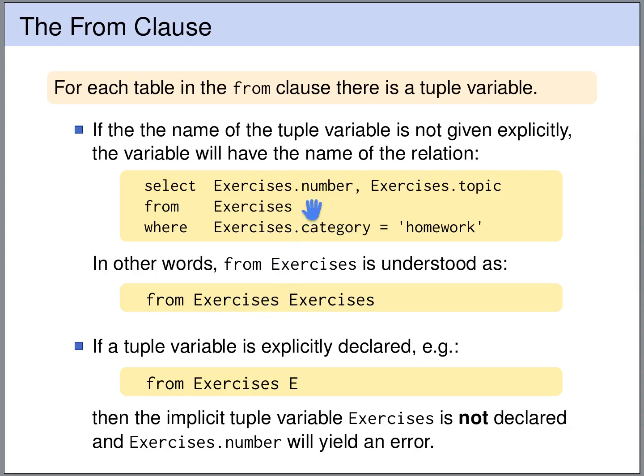So in this case, we have a tuple variable named exercises. So we can access the attributes by saying exercises.category, exercises.number, or exercises.topic. If we give an explicit tuple variable name, then we can no longer use exercises.category. Then we have to say E.category, E.number, or E.topic.